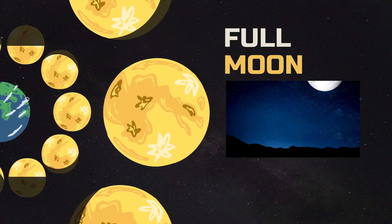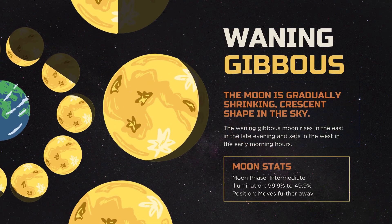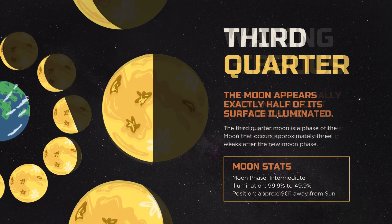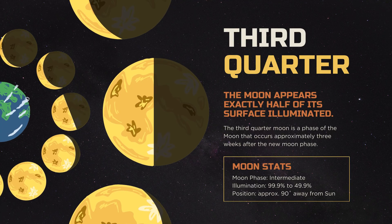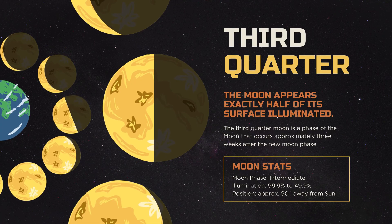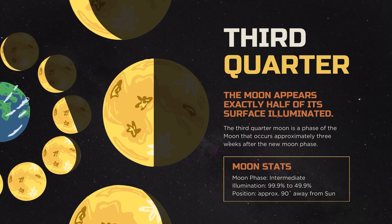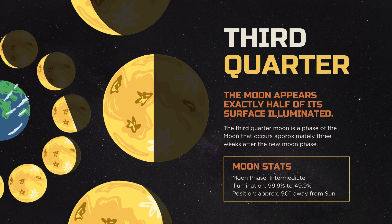As the Moon begins to shrink, we enter the waning phase. The waning gibbous sees the Moon gradually shrinking, followed by the third quarter, where the Moon once again appears half-illuminated. The third quarter phase is similar to the first quarter, with half of the Moon's visible surface illuminated.